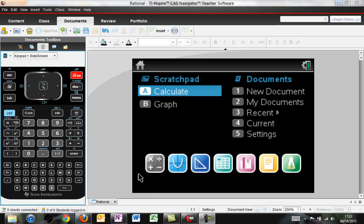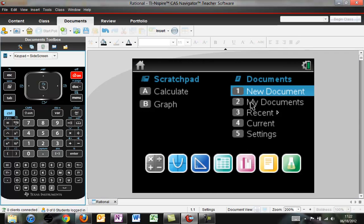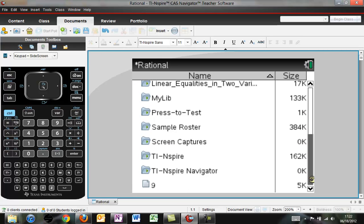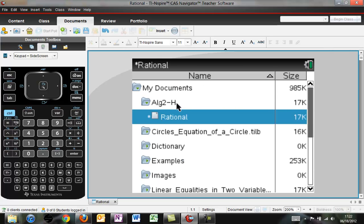This video will walk through navigating between documents. You can go to a new document and create a new document, or you can go to My Documents and navigate some of the folders and directory structures and open up documents. Typically we'll be sending you documents through the Wi-Fi network, but I have a document open right now about rational numbers.